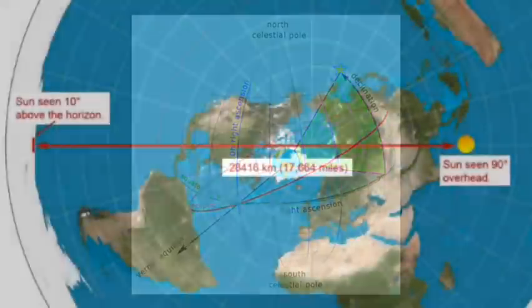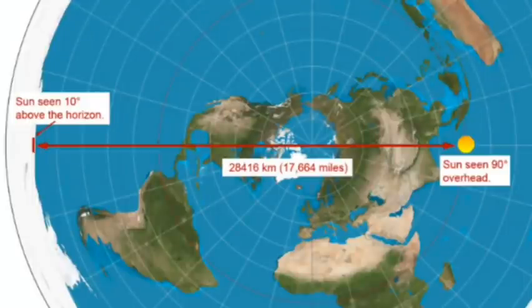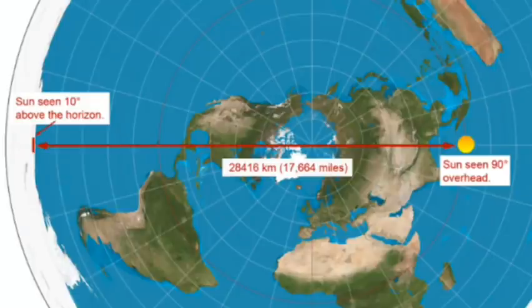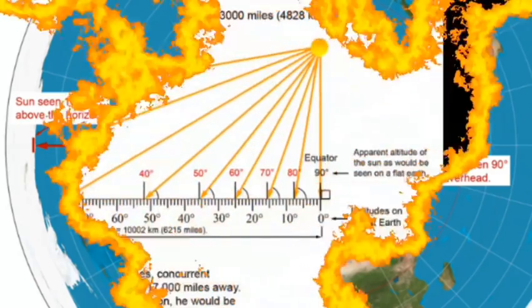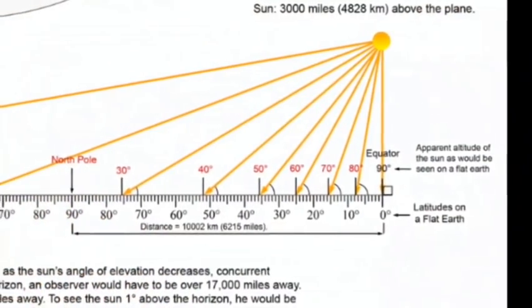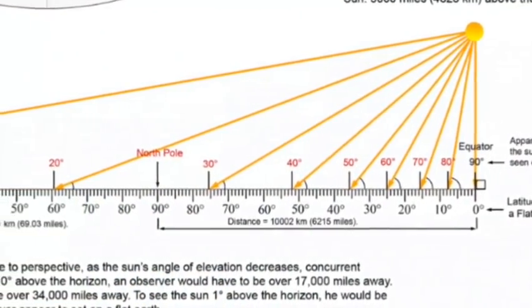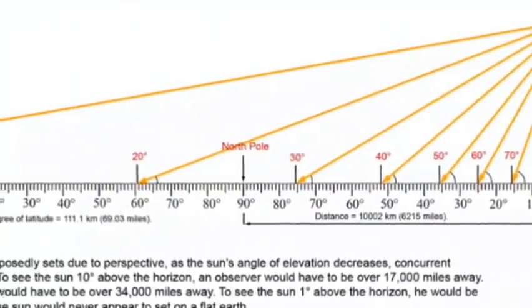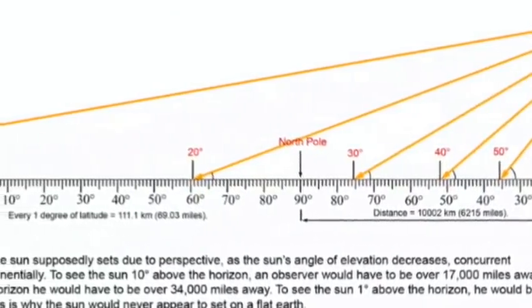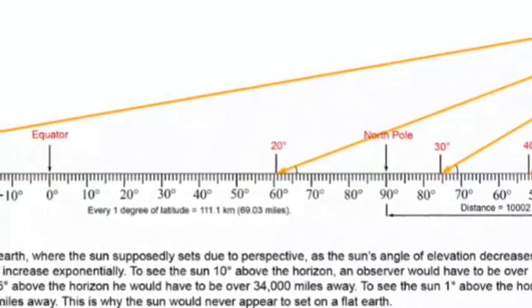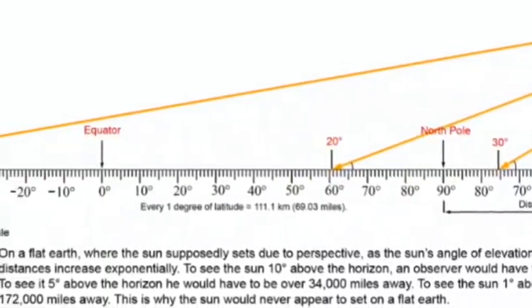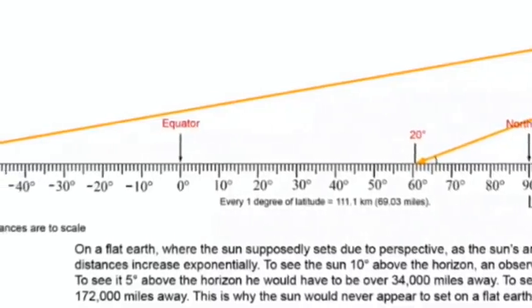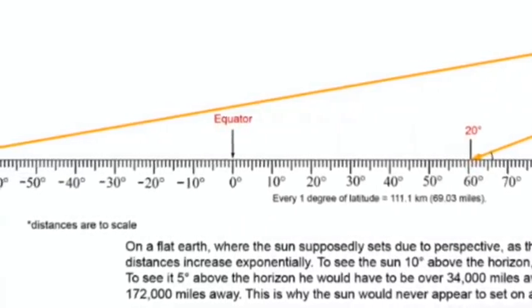On a flat Earth, where the Sun supposedly sets due to perspective, as the Sun's angle of elevation decreases, concurrent distances increase exponentially. With regard to latitudinal position, this means that an observer's latitude will always be equal to the Sun's angle as measured from 90 degrees overhead. To see the Sun at 10 degrees above the horizon, an observer would have to be over 17,000 miles away. To see it at 5 degrees above the horizon, he would have to be over 34,000 miles away. To see the Sun 1 degree above the horizon, an observer would have to be 172,000 miles away. This is why the Sun would never set on a flat Earth.